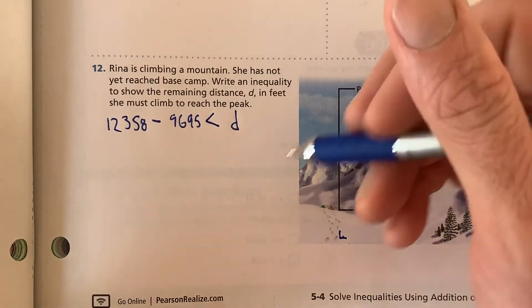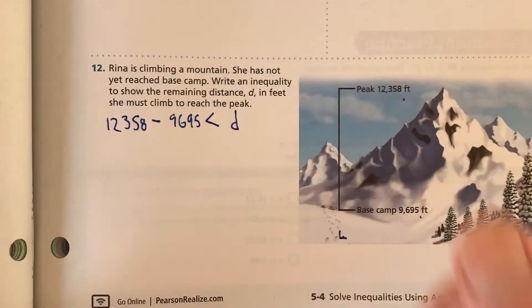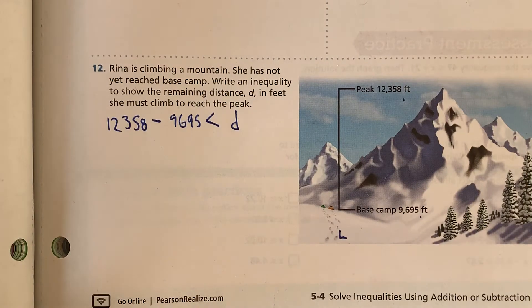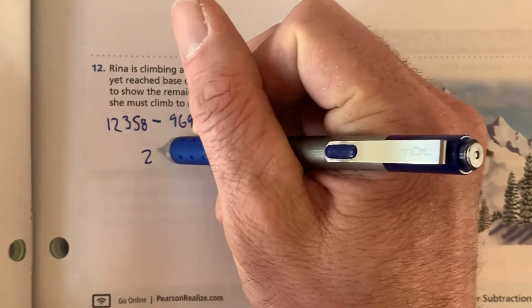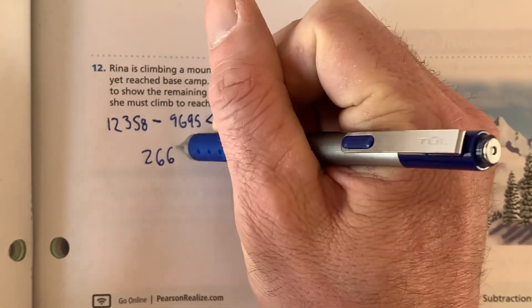And since d, if we do the subtraction problem, what we find is that 12,358 minus 9,695 is going to be 2,663.